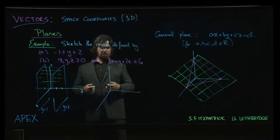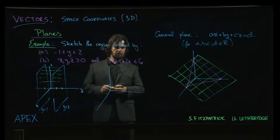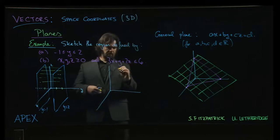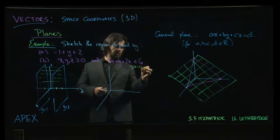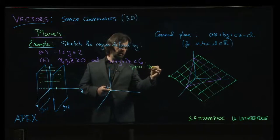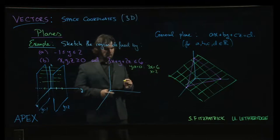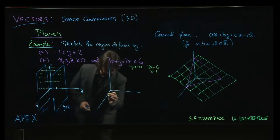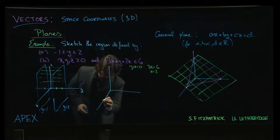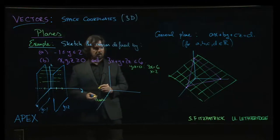Now one of the ways that we'll do this is we're going to get the intercepts. So notice that if y and z are both 0, we get 3x equals 6. So x is equal to 2. So one of the intercepts is here: 2, 0, 0.